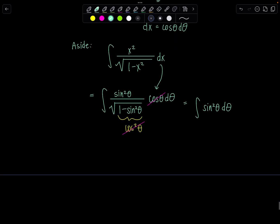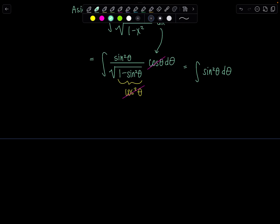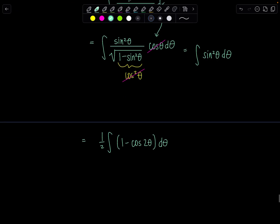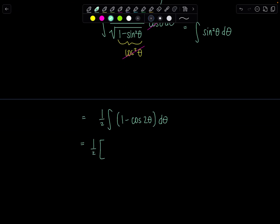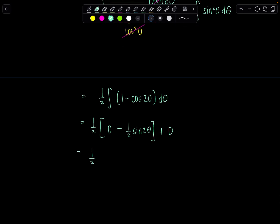Any time you see sine squared in an integral by itself, replace it with the half-angle identity. Take the 1 half out front. So sine squared theta equals 1 half times (1 minus cosine 2theta). The antiderivative of 1 is theta, and the antiderivative of cosine 2theta is 1 half sine 2theta. Cleaning up: this becomes 1 half theta minus 1 fourth sine 2theta. And replacing sine 2theta with 2 sine theta cosine theta gives 1 half theta minus 1 fourth times 2 sine theta cosine theta.